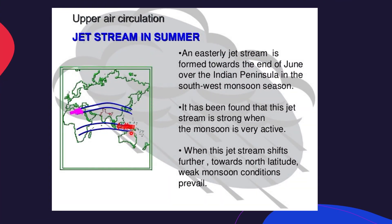An easterly jet stream forms by the end of June over the Indian peninsula, and it has been found that this jet stream is very strong when the monsoon is very active. When this jet stream shifts further towards the north, the monsoon becomes weak. Now that we know about jet streams, we are able to understand why sometimes the monsoon becomes strong and sometimes it becomes weak.